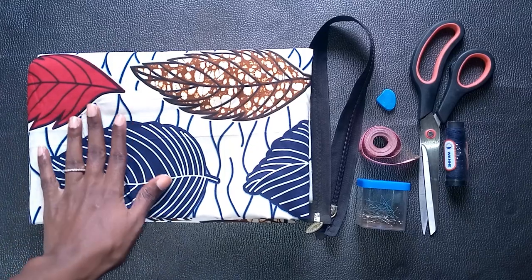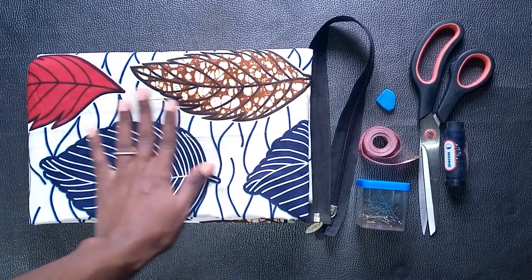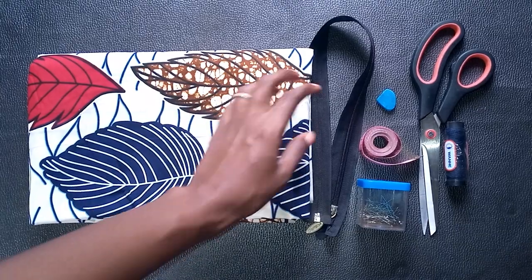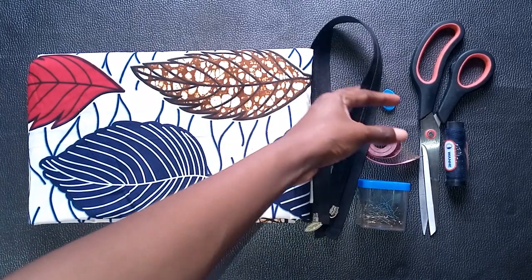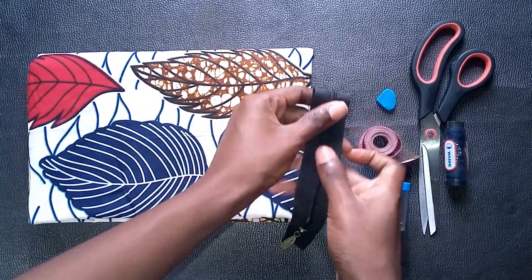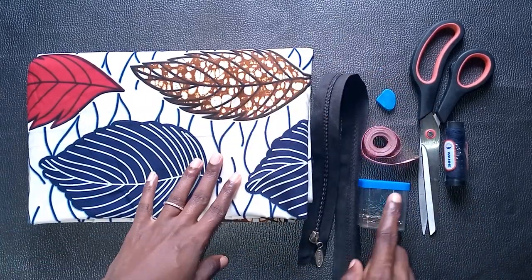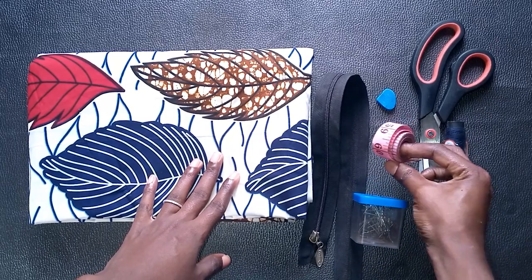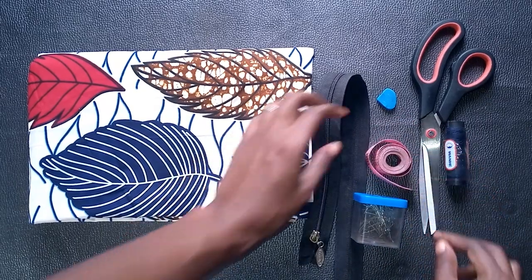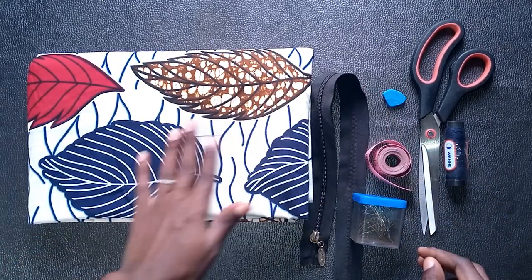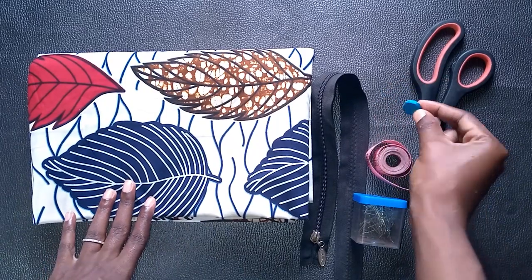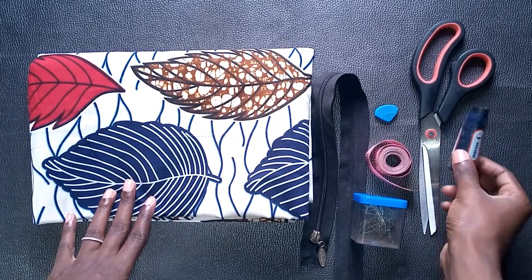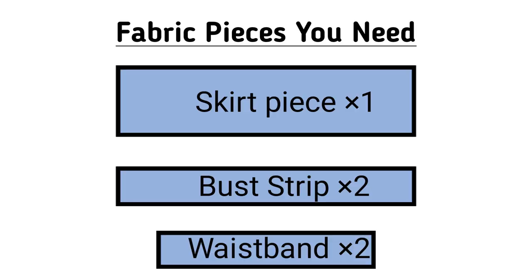For this tutorial you'll be needing your African print fabric — you want to go for something that looks the same on both the wrong side and the right side. You'll also need your zipper, some pins, your measuring tape, your fabric marking tool (I just have a fabric chalk here), your scissors, and of course a matching thread.